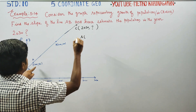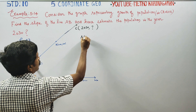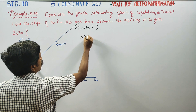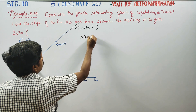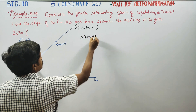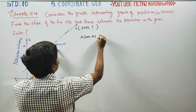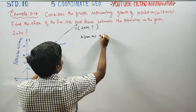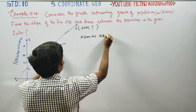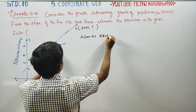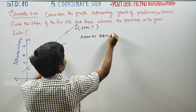Point A is (2005, 96) and point B is (2015, 100). These are our two coordinates — x1, y1 and x2, y2.